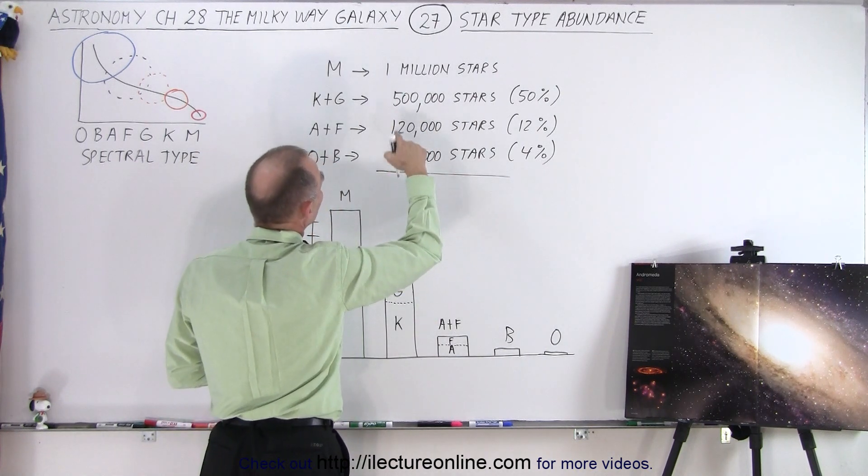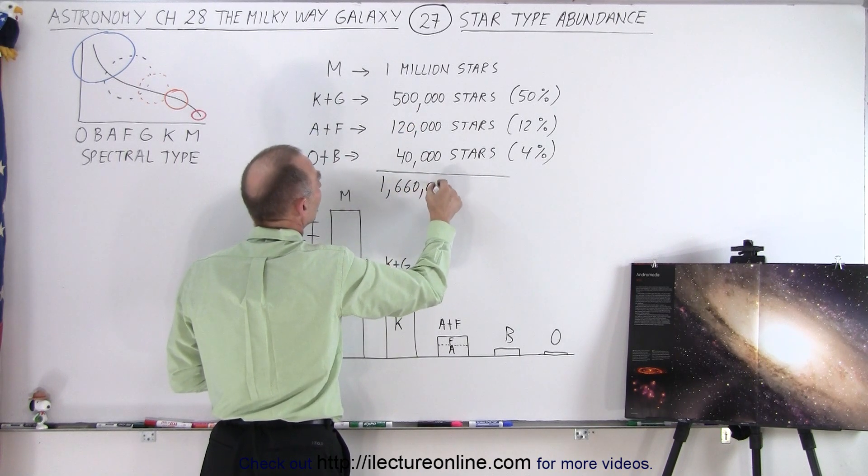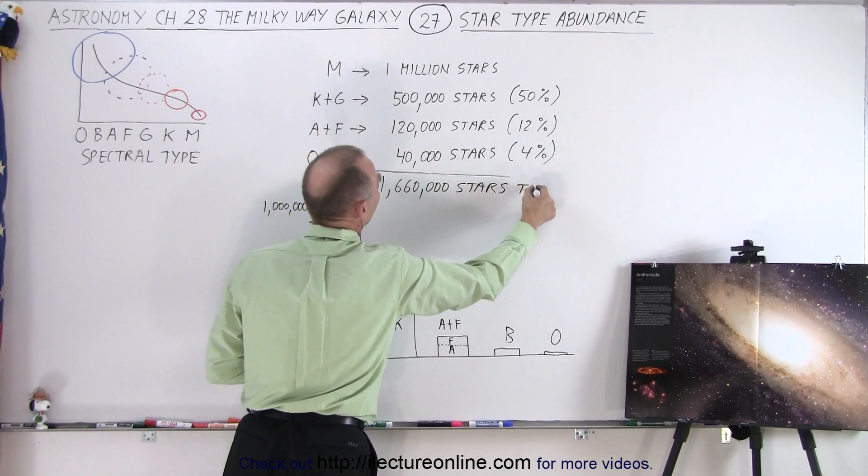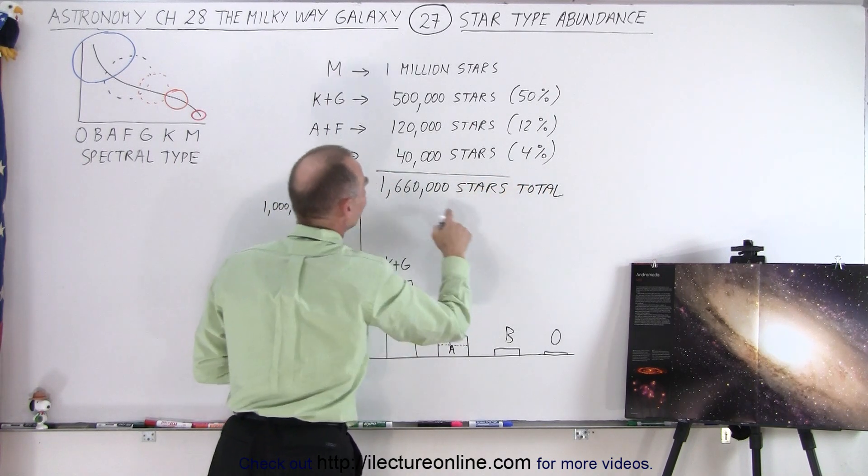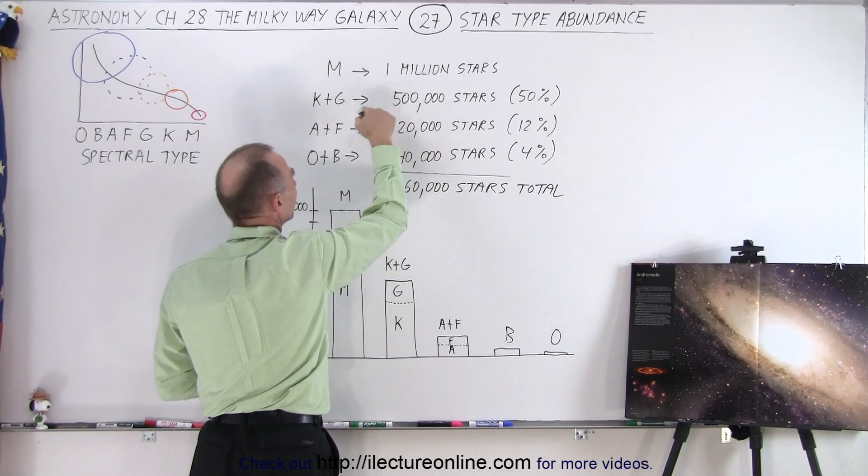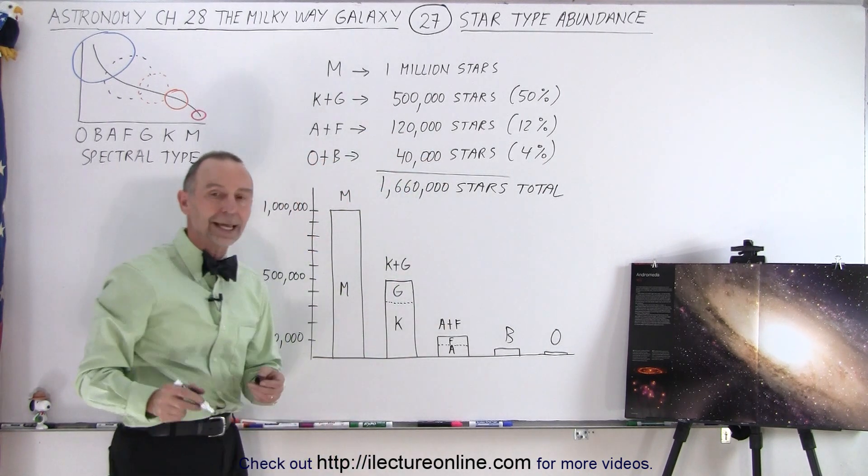You have to add them all up. Well, so that would be 660, that would be 1,660,000 stars total. So if you had this many stars, a million of them would be this type, 500,000 would be this type, 120,000 would be this type, and 40,000 would be this type. That's another way of looking at it.